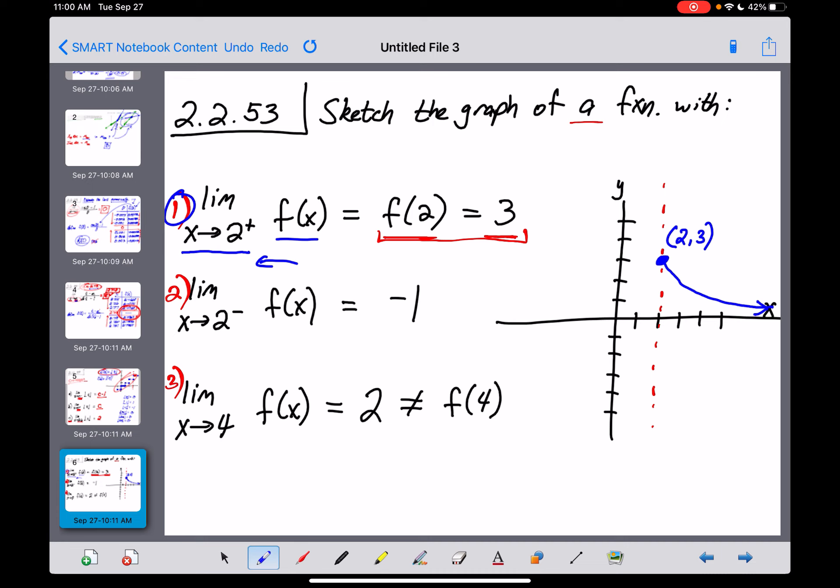Now what else is going on here? Stipulation number 2. The limit as x approaches 2 from the left of this function has to equal negative 1. It does not have the same limit that we had at the right. This tells me that we are getting near to a point here. When x is equal to 2, we should be narrowing in on a y value of negative 1.